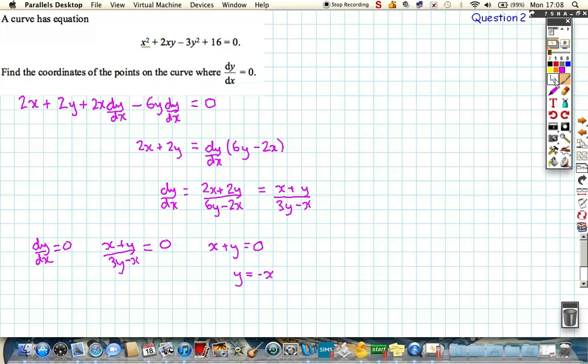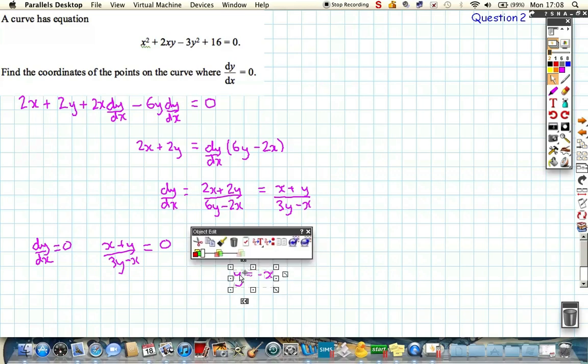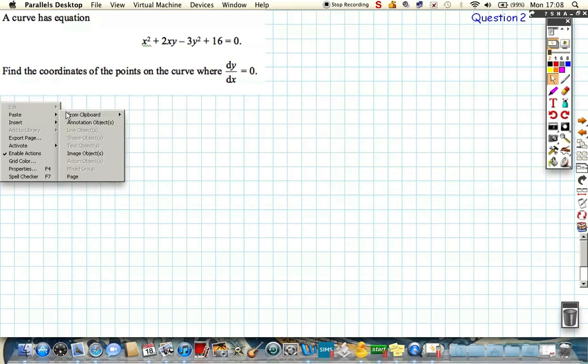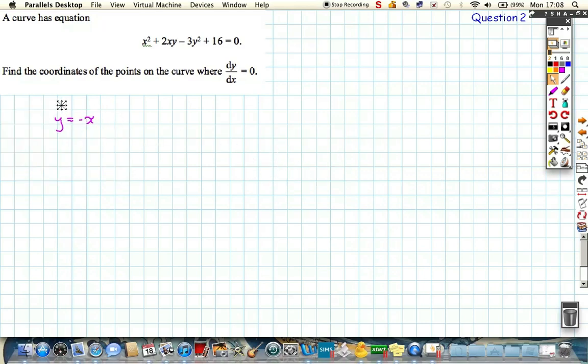And we can use that to help us find the points on the curve. What we're going to do is we're going to take this expression, and we are going to substitute it into the original curve. So if we take the y equals minus x, and now all we have to do is find the points on the curve where the gradient is 0, we have to put this expression in. So we're going to go through and substitute for y,